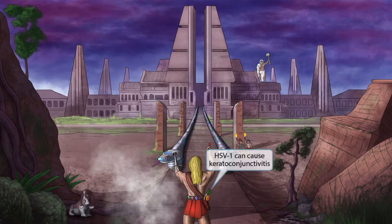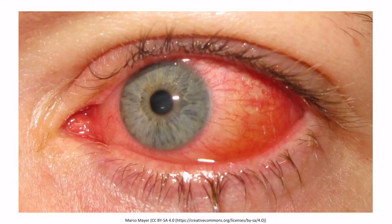Keratitis means inflammation of the cornea, and conjunctivitis means inflammation of the conjunctiva. So together, keratoconjunctivitis means inflammation of the cornea and the conjunctiva. This is an image of viral keratoconjunctivitis — as you can see, the conjunctiva is clearly inflamed, but the cornea can't be very well visualized unless special dyes are used, so this can be a bit harder to see. Regardless, this patient was confirmed to have viral keratoconjunctivitis.